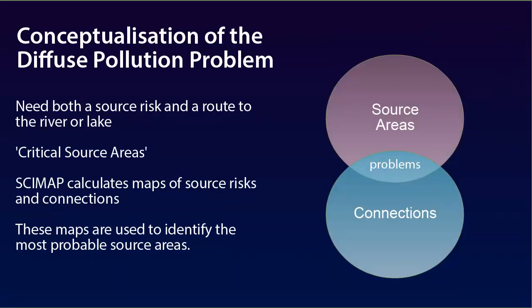With CIMAP, the problem of diffuse pollution is conceptualised using the critical source areas approach. This approach considers where the potential sources of a problem are in the landscape, and the availability of an effective pathway from that source to a river or lake. If there is simply a source of risk which is not connected to the river or lake, then the material cannot be exported and hence cannot impact on the ecology. Therefore, to identify the most probable source areas, we calculate maps of source risks and connections across the landscape to the rivers and lakes.